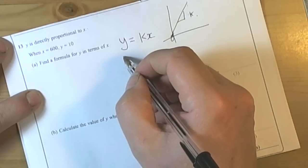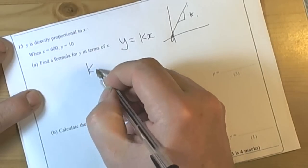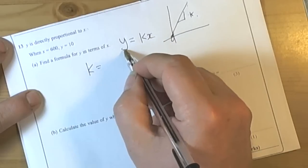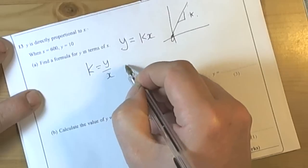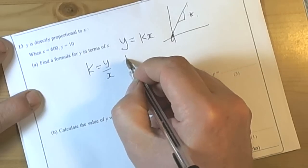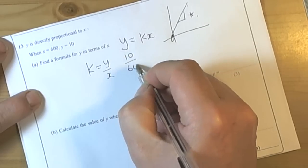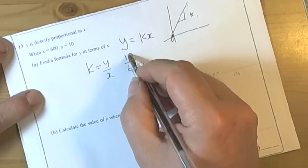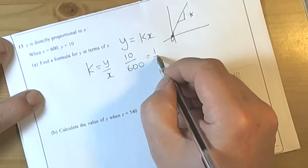Let's have a look at the values. So they told us, right, rearrange this to be k equals. So x is times in here, so on the other side it will be divide. So they told us that when y is 10, x is 600. We should always simplify fractions, so both of these will divide by 10, so it's 1/60th.